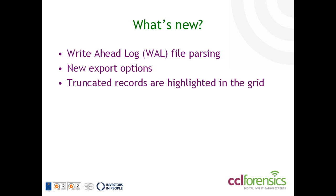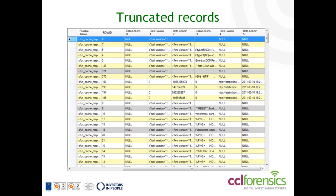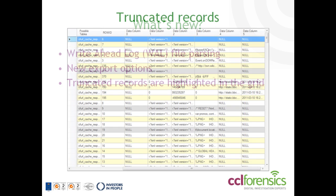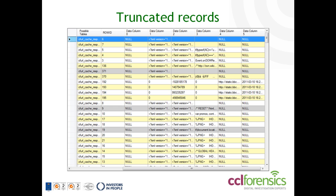Previously when Epilog recovered records that were incomplete, there was no way for the user to differentiate these records from complete records. In the new version of Epilog, where truncated records have been recovered, they're highlighted in grey, allowing the user to make more informed decisions about the data.